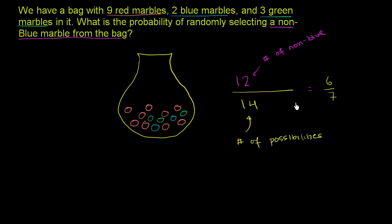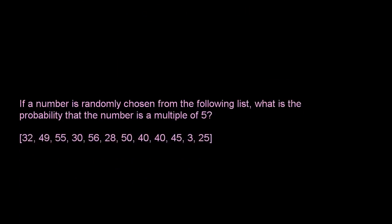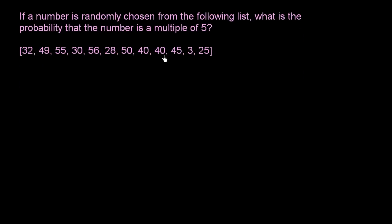These are the possibilities that meet our constraints over all of the possibilities. This isn't in simplified form, since both 12 and 14 are divisible by 2. Dividing numerator and denominator by 2, we get 6 over 7. So we have a 6-sevenths chance of selecting a non-blue marble from the bag. Let's do another one. If a number is randomly chosen from the following list, what is the probability that the number is a multiple of 5?